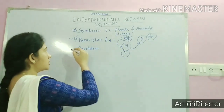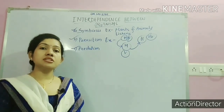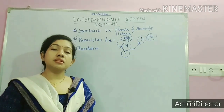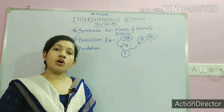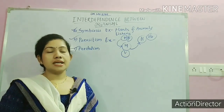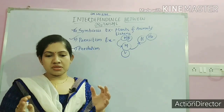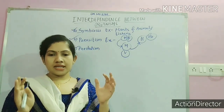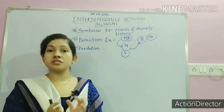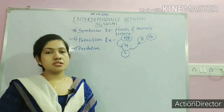The next type of interdependency is predation. Predation means the act of killing. Killing an organism is not comfortable for us, but it is nature's rule.